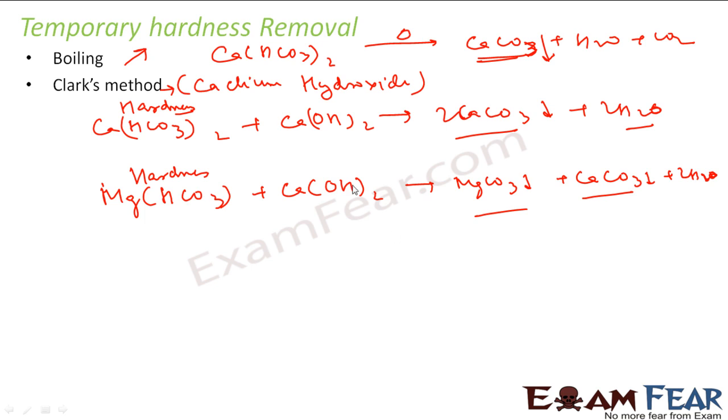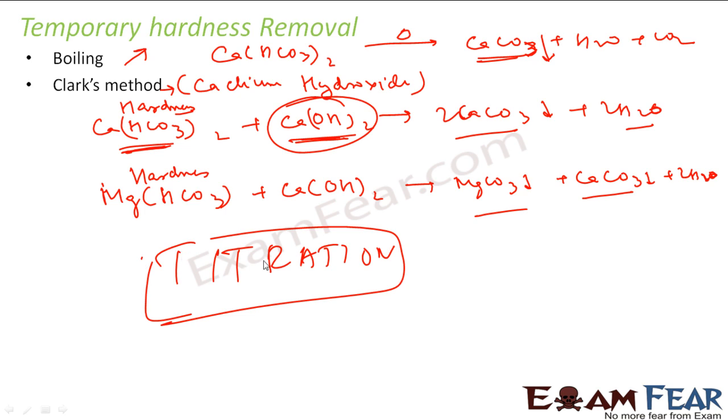Please note we have to add proper quantity of calcium hydroxide only. If you add more quantity of calcium hydroxide, this hardness is gone but we will have new hardness because this is also calcium ion. We have to add proper quantity only. How to get the proper quantity? With titration we get the quantity of calcium hydroxide that has to be added to the temporary hard water to make it soft. If you add a lot of calcium hydroxide, it will make the water hard again. We have to be careful here.